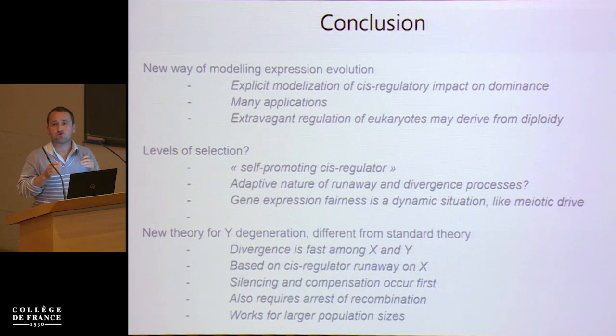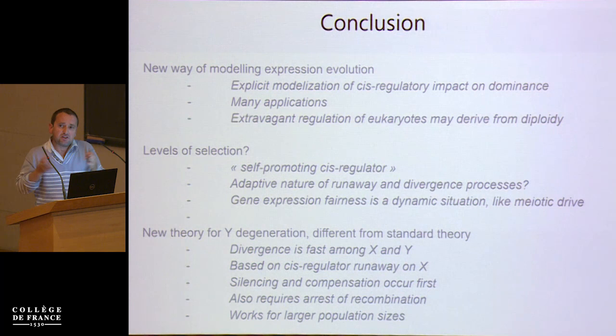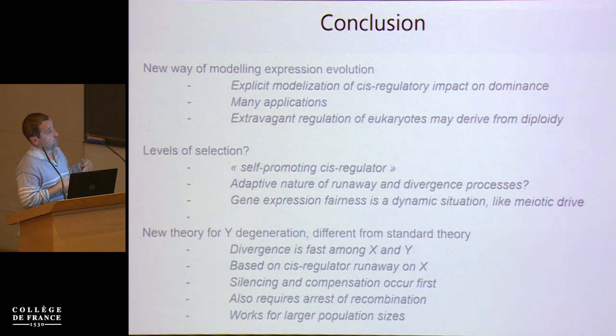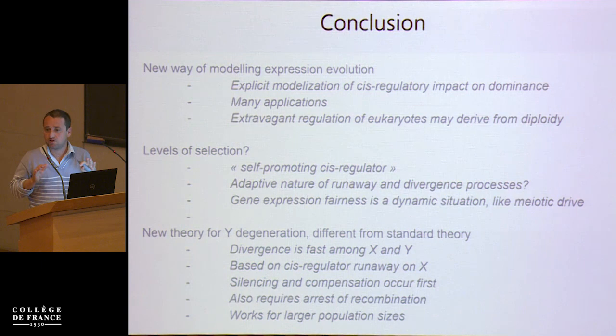It's not entirely clear what the level of selection is here exactly, because these cis regulators are really favored positively, although it's not necessarily favorable at the individual level. For Y degeneration, this is different from standard theory and adds a possibility to the different options we have for the theory of sex chromosomes. This theory provides fast degeneration and divergence between X and Y, based on cis regulator runaway on the X. In this theory, silencing occurs first, not second. It also requires the arrest of recombination between X and Y — otherwise it doesn't work. And it may work for larger population sizes than current theory does.